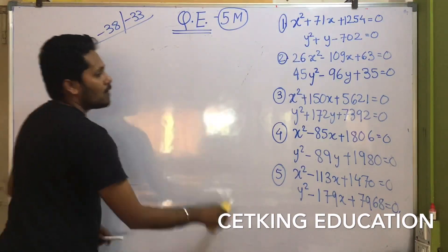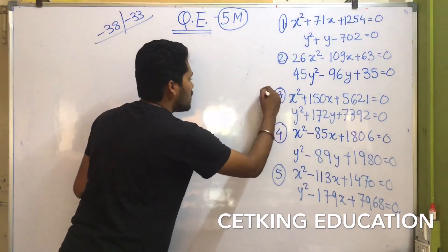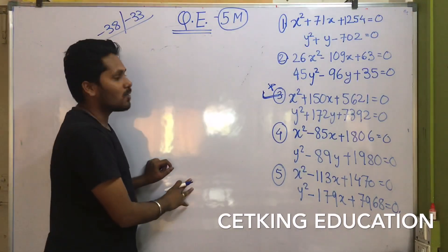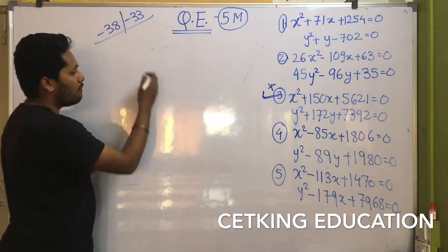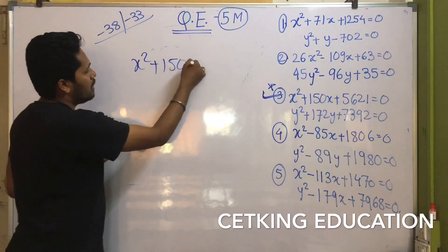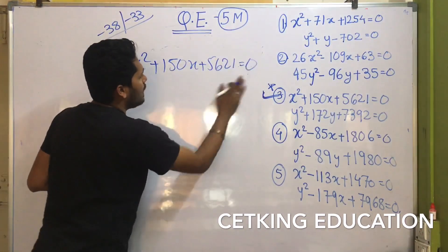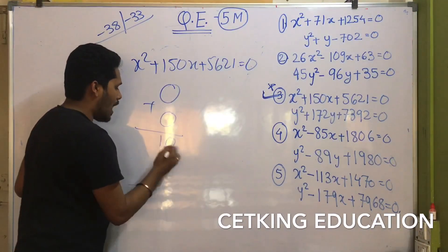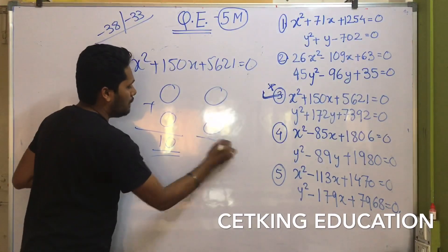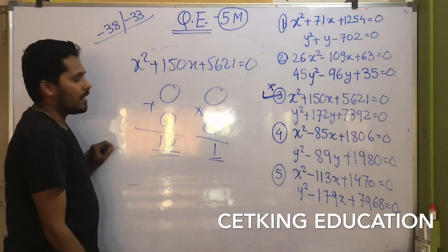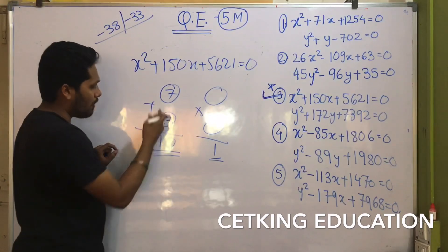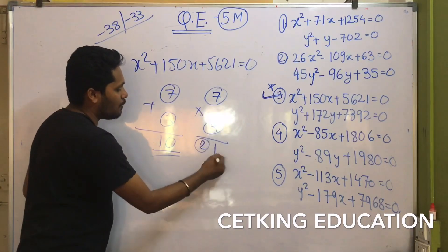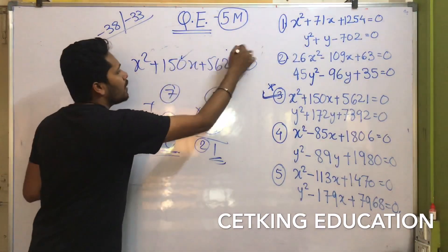Now let's try the third question. This is very important, and trust me, 50 to 60 percent of people are going to leave this question, but we will solve it in a faster way. x² + 150x + 5621 = 0. I need two numbers whose addition gives unit place 0 and whose multiplication gives unit place 1. It's simple: 7 + 3 = 10 and 7 × 3 = 21, giving unit digit 1 and unit digit 0. So you are sorted with your unit place: 7 and 3.